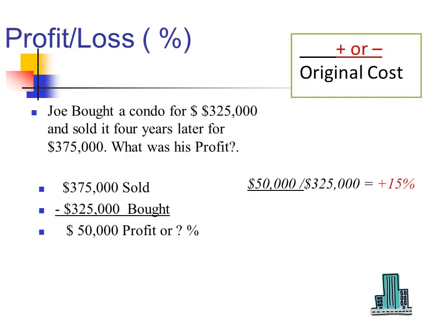Profit and loss. This is how we compute profit and loss as a percent. Joe bought a condo for $325,000 and sold it four years later for $375,000 — we have a profit here. What was his percent of profit? We simply take the amount of profit or loss and divide it by the original acquisition cost. In this case, we had a profit of $50,000 and our original cost was $325,000. We divide and get a profit of plus 15%.